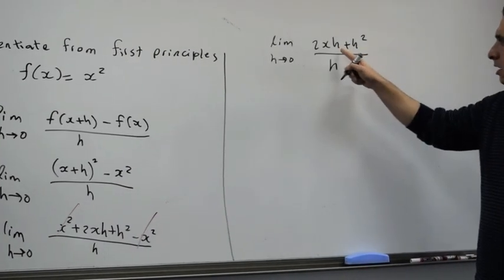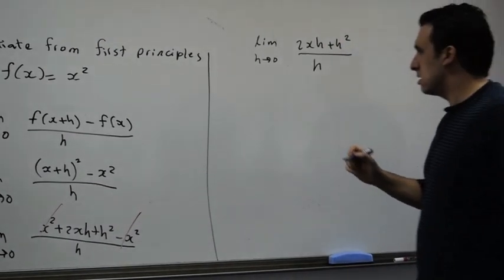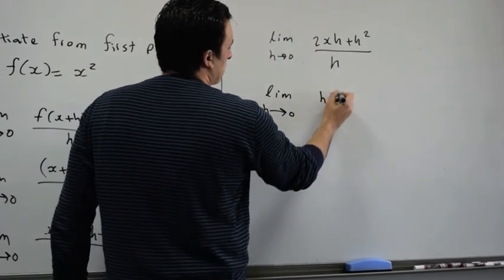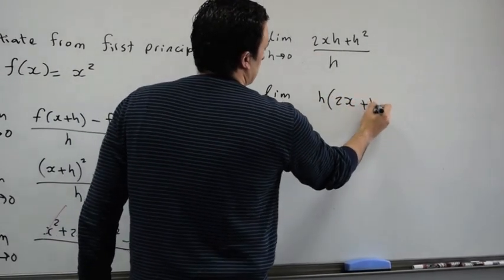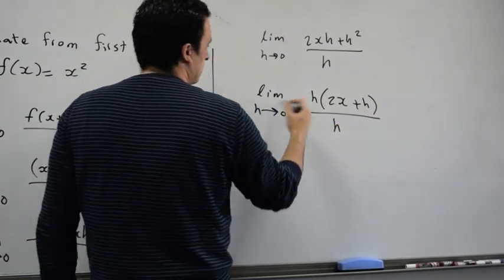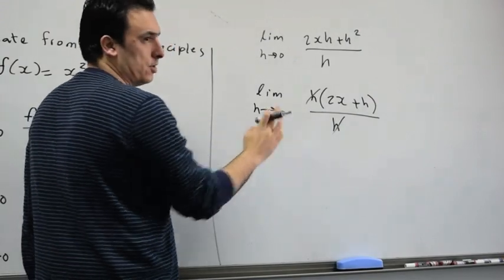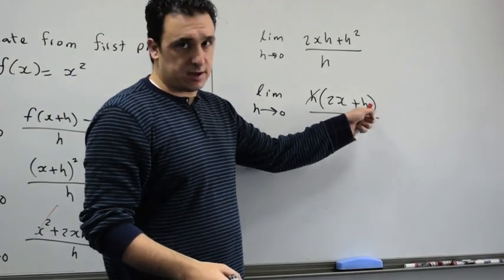So now we take h as a common factor. Limit as h approaches 0. Take h as common factor: h times (2x + h) divided by h. Cancel the h's together. And then now take the limit of this as h approaches 0, meaning we have to substitute 0 for h.